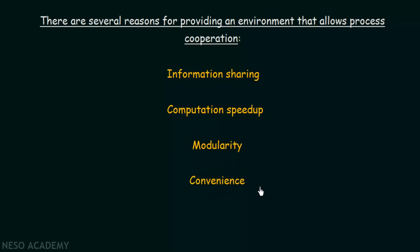The next point is convenience. If we allow the processes to cooperate with each other, that becomes very convenient for the user. For example, a user may be doing several different tasks at the same time — listening to music, typing a document, or printing a document. When doing all these things at the same time, there are different processes running concurrently and they need to cooperate with each other so that all the tasks can run smoothly without clashing with each other. So convenience is another reason why we need to provide an environment that allows process cooperation.